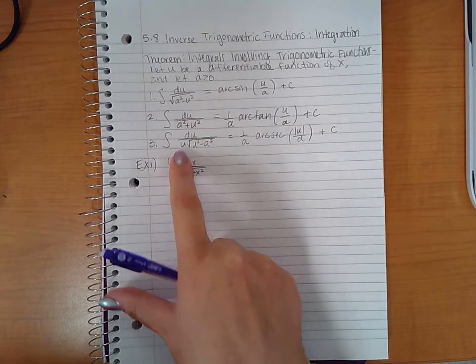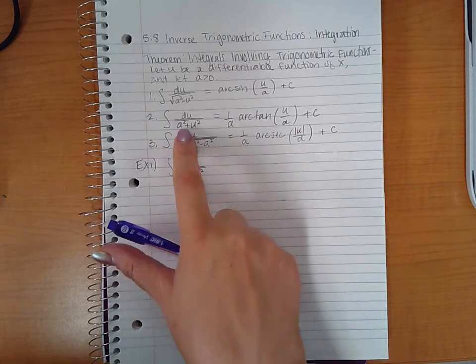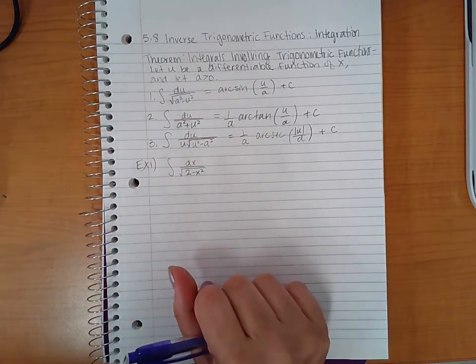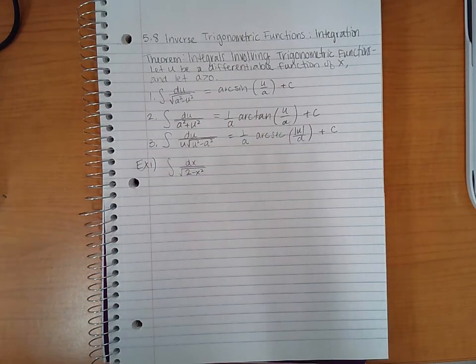Because you don't have an extra variable on the outside for it to be for item three and you have a square root, not like number two where there is no square root. So this one really does identify more with number one, so I have a feeling that we're going to end up with the arc sine of something. We just have to identify what is u and what is a.